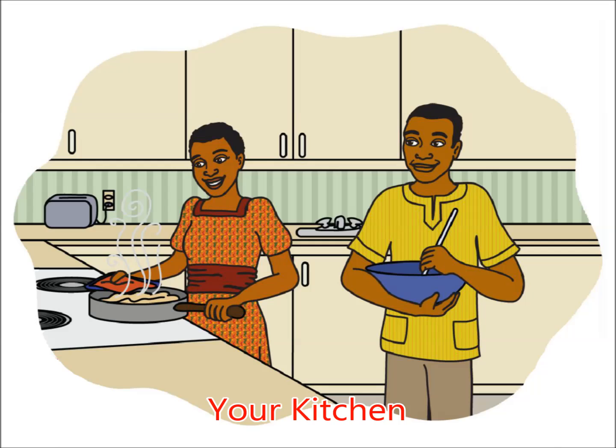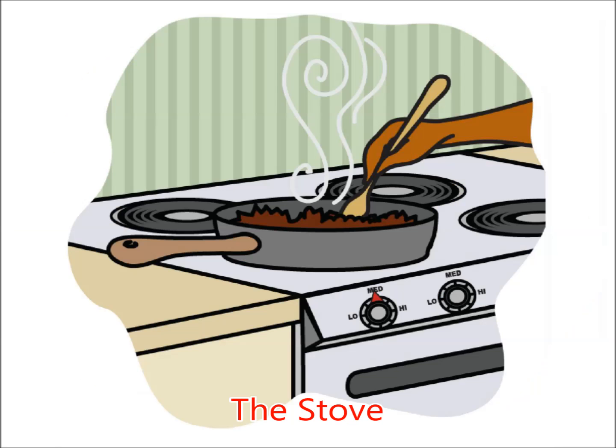Your kitchen. An important area of your apartment to keep clean is the kitchen. The kitchen has many appliances, some that may be new to you. The stove. When cooking food on top of the stove, always begin on low or medium heat and then adjust. If you begin on high heat, you may burn the food or pan.